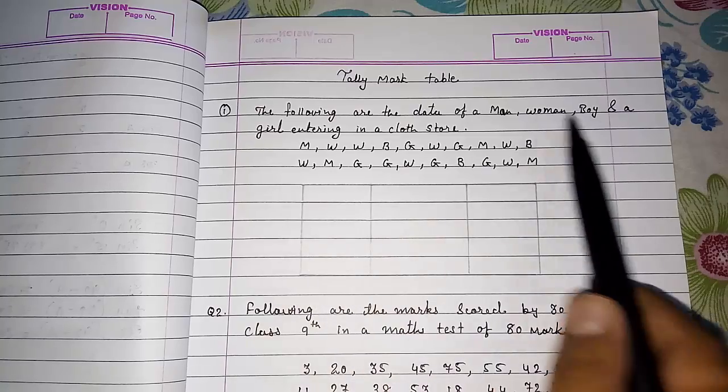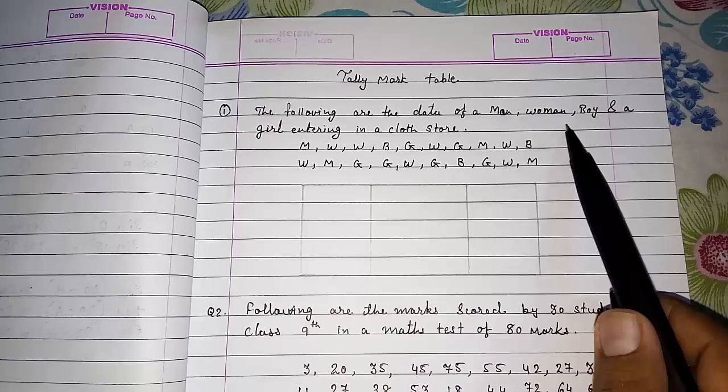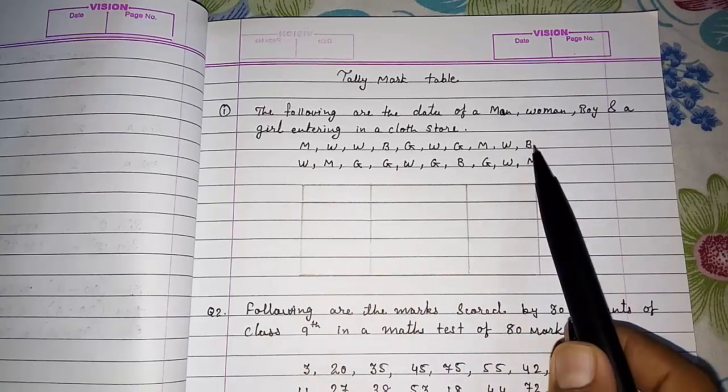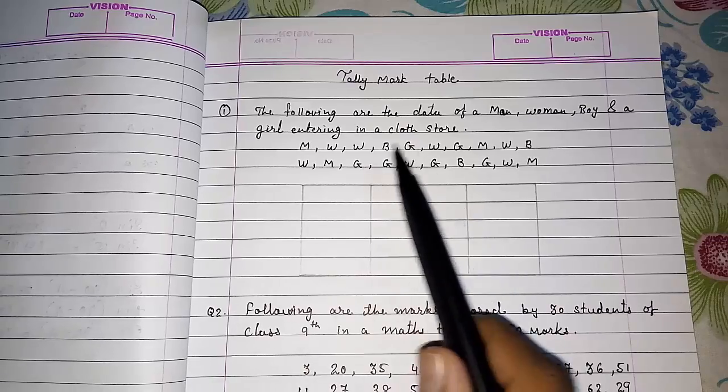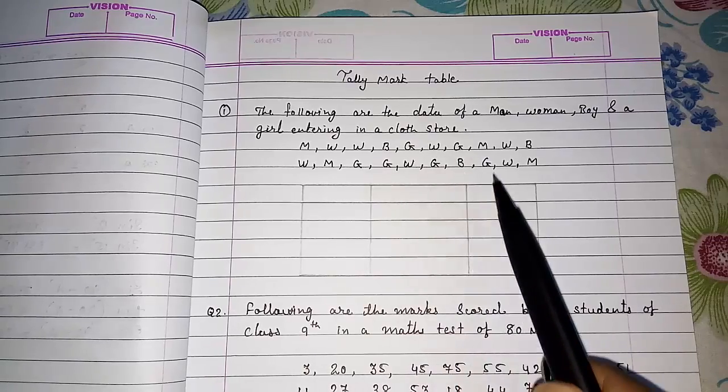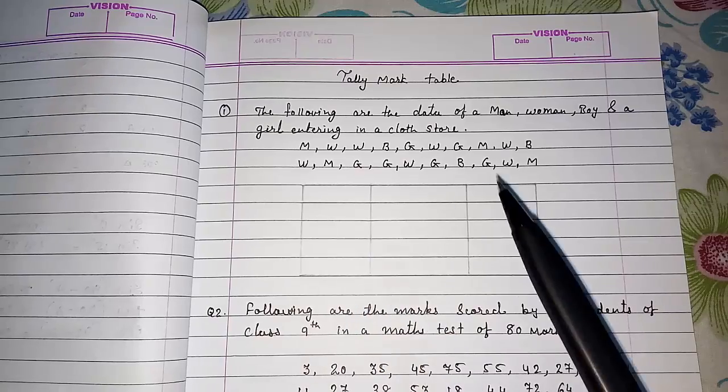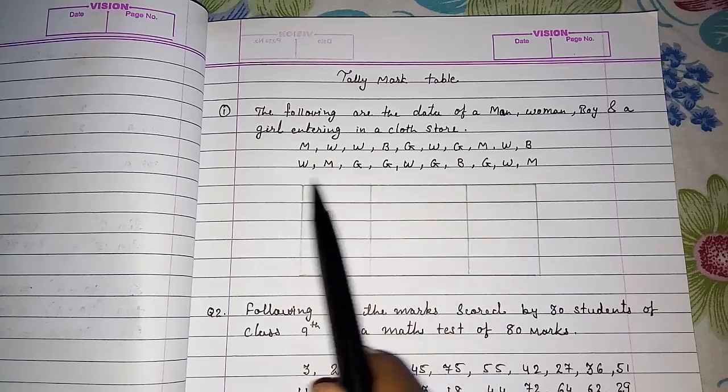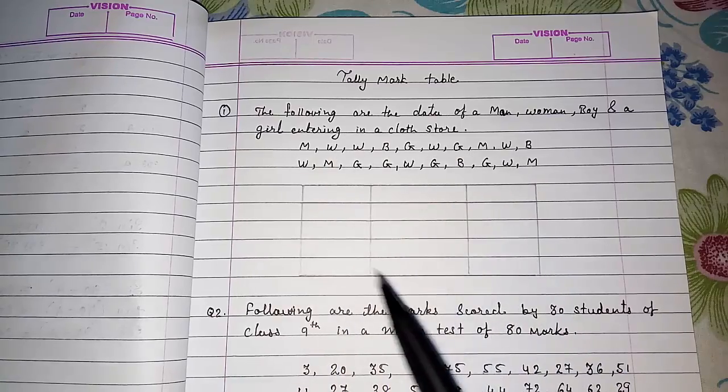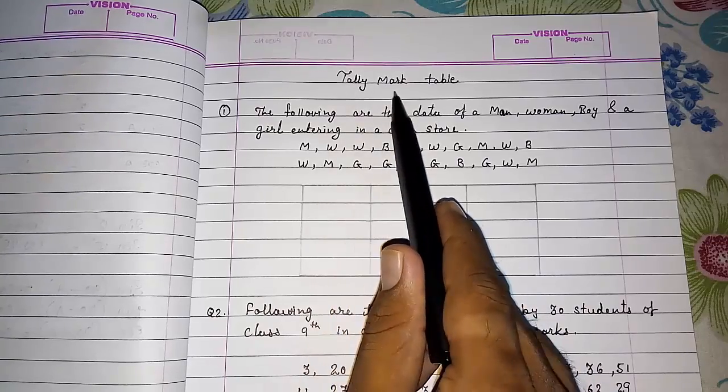First of all, I am going to tell you why it is necessary to study about tally mark table. When we are getting any data, this data is called raw data. Now we have to arrange it systematically to find out something what we need from that data.